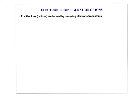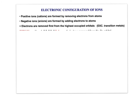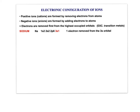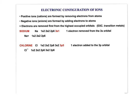Positive ions are formed by removing electrons; negative ions by adding electrons. Electrons are removed first from the highest occupied orbital, except for transition metals. For example, sodium plus is formed by removing one electron from the highest occupied orbital, which is 3S. For chlorine, it gains one electron which goes into the P orbital, giving it a full octet.